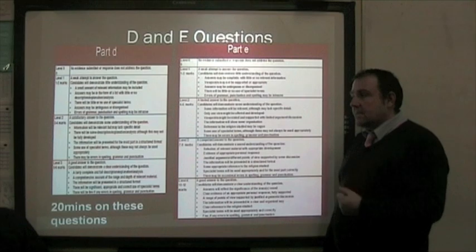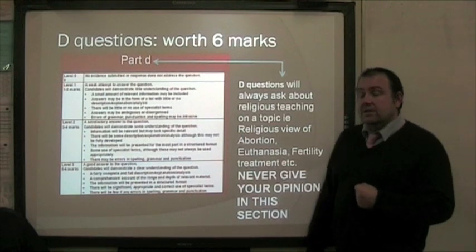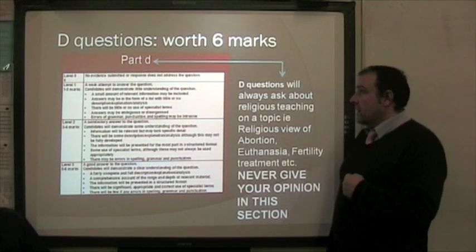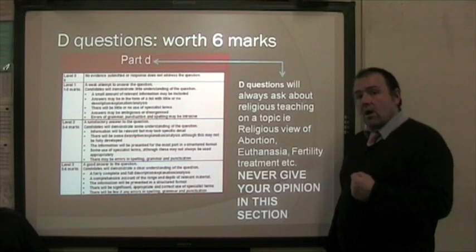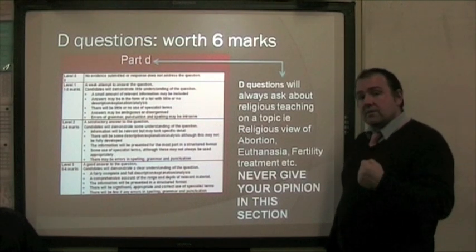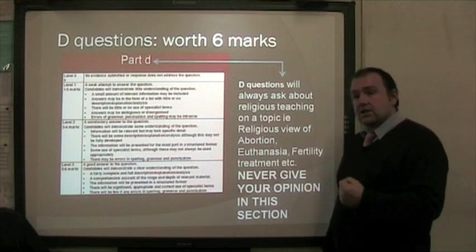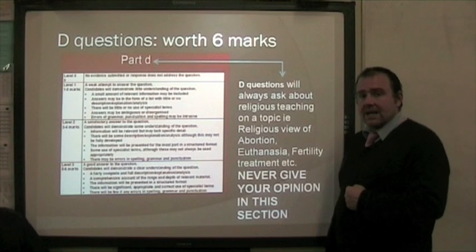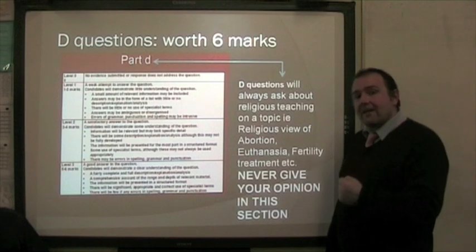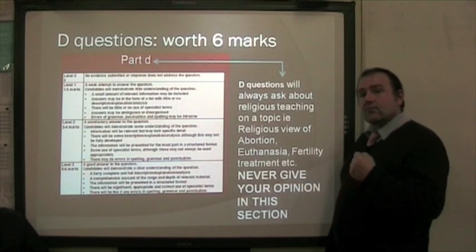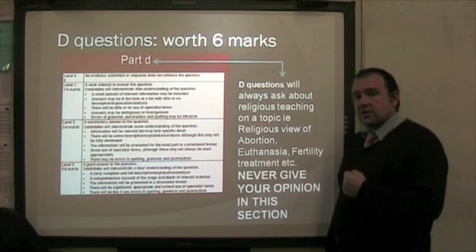Each of the higher levels has specific things you need to do to achieve it. Part D questions are worth 6 marks, and they will always ask you about religious teaching on a topic — for example, a religious view of abortion, euthanasia, fertility treatment, etc. You will have to give specific teachings and quotes from Christianity in order to answer this question. In this section you never give your own opinion — it will just be ignored. It's always a religious view we're looking for, and a Christian view at that.